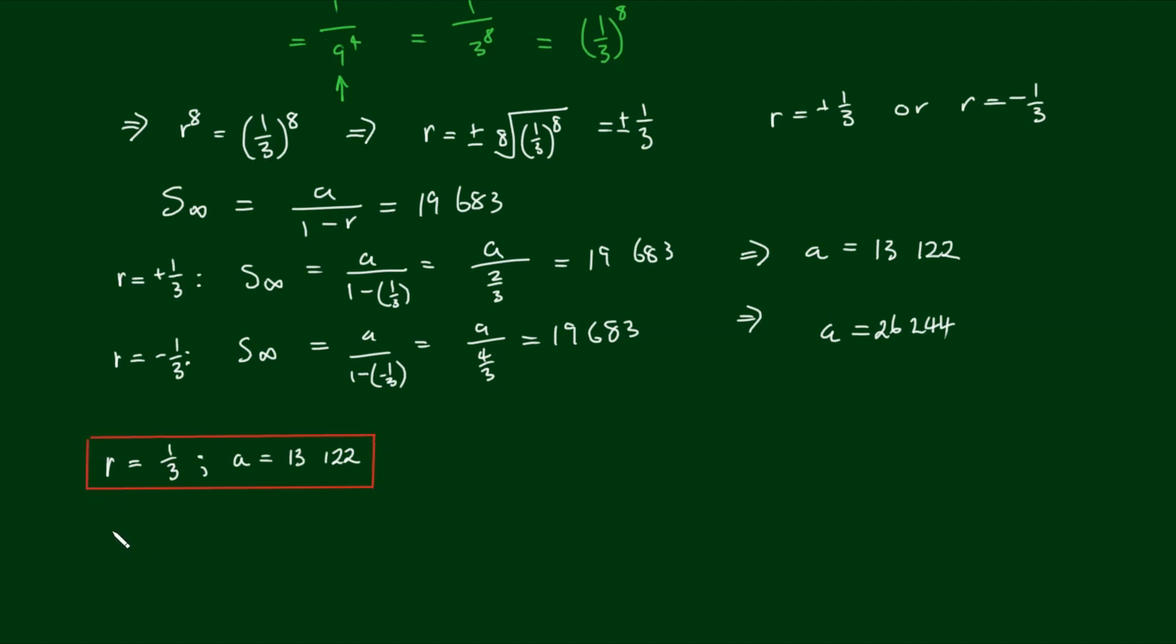And the other possibility is the common ratio r is equal to negative 1 third, for which the corresponding first term should be 26,244, twice the value for when r is equal to 1 third.